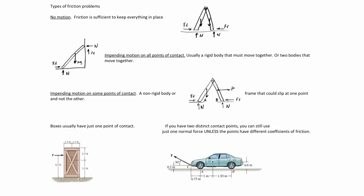Boxes usually have just one point of contact, which is easy to analyze. If you have two distinct contact points, you can still use just one normal force unless the points have different coefficients of friction. For a car, one set of wheels might be freely rolling and the other set braking — different coefficients. But if both brakes are on and both tire coefficients are the same, you can treat it like a box.